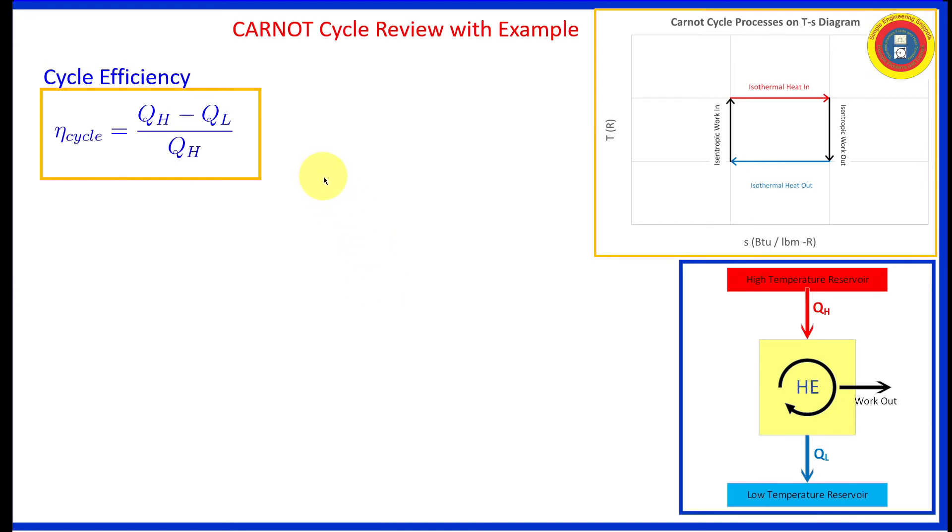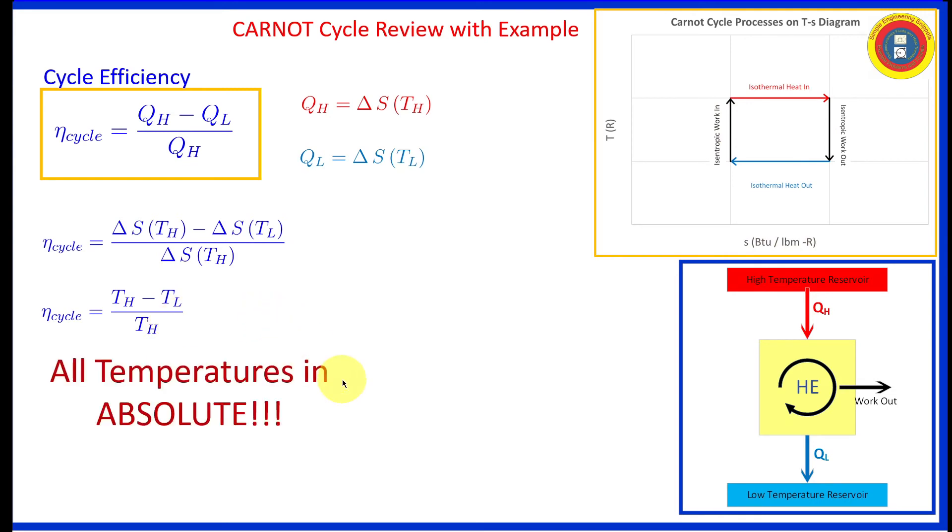Going back to cycle efficiency, let's substitute in our equations that we determined for our Carnot cycle. These are Carnot cycle specific. Plugging those in and the change in entropy for each of these terms are the same as we can see in our TS diagram. So that simplifies and this is the equation to calculate the Carnot cycle efficiency and I need to reiterate that all these temperatures need to be an absolute.